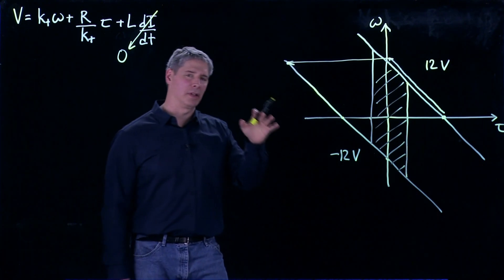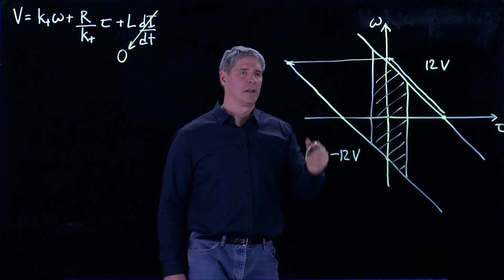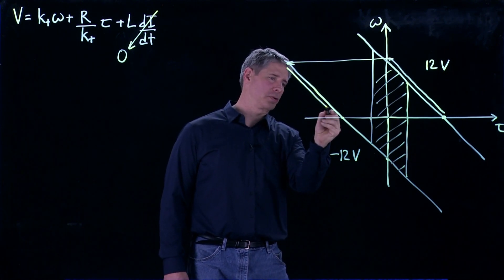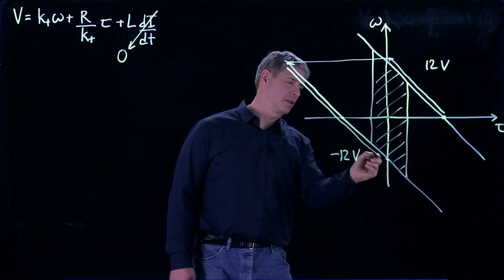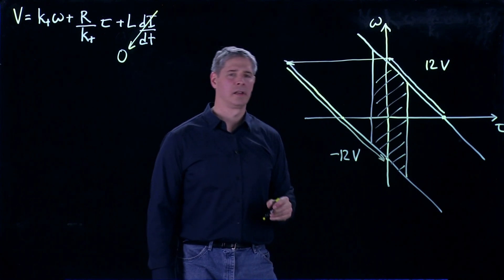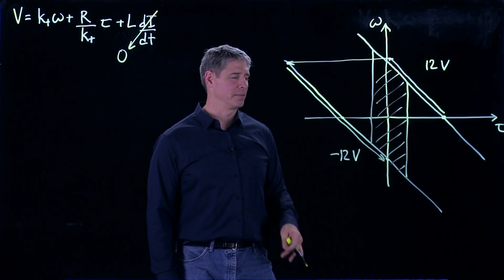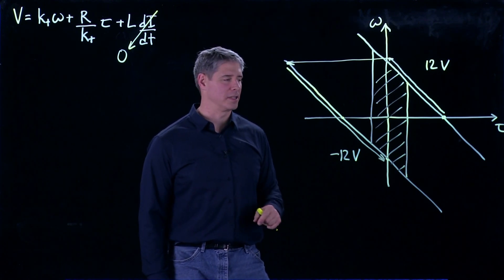And now here we see that we have a large negative torque. And so what's going to happen is the motor is going to move down on the speed-torque curve like this until eventually it hits its no-load speed in the negative direction with this constant minus 12 volts across it.